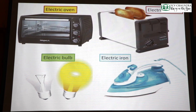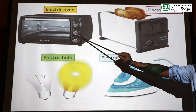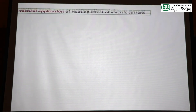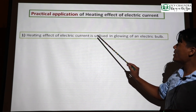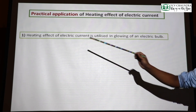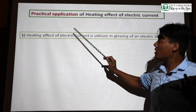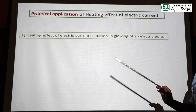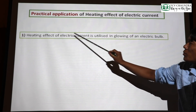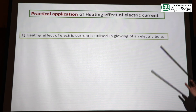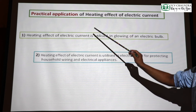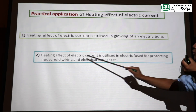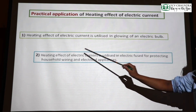Practical application of heating effect of electric current. Heating effect of electric current is utilized in the glowing of electric bulbs. Heating effect of electric current is very important in our daily life. The second use is that heating effect of electric current is utilized in electric fuse for protecting household wiring and electrical appliances.